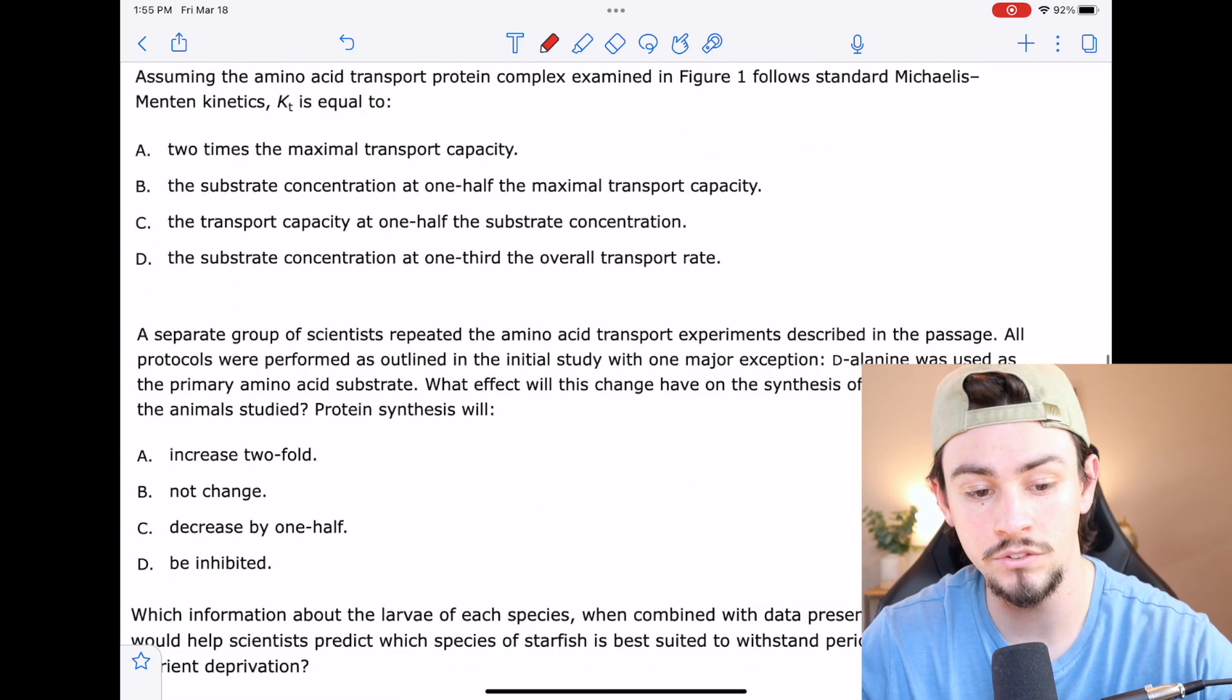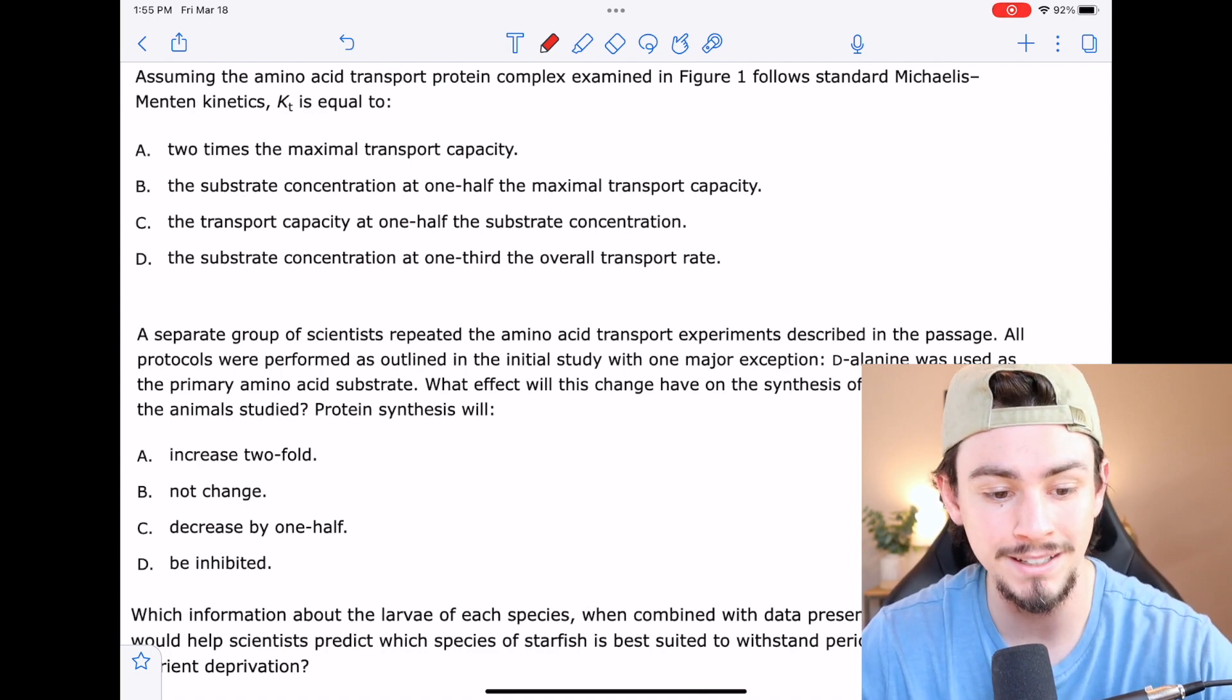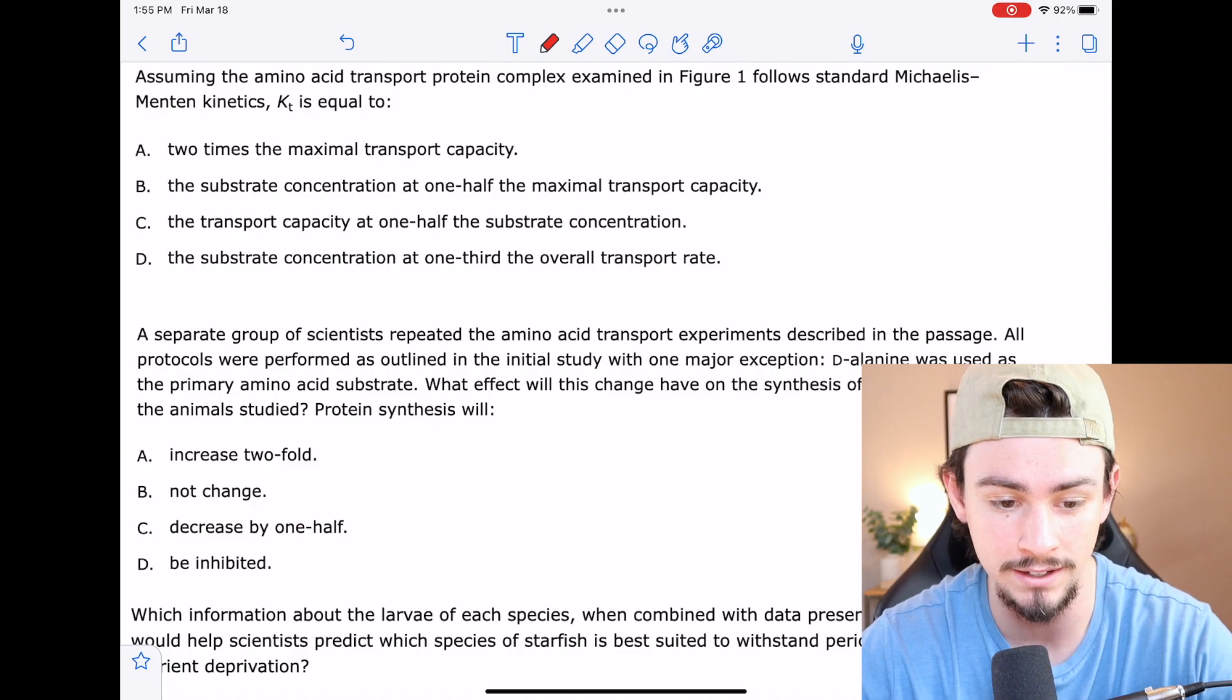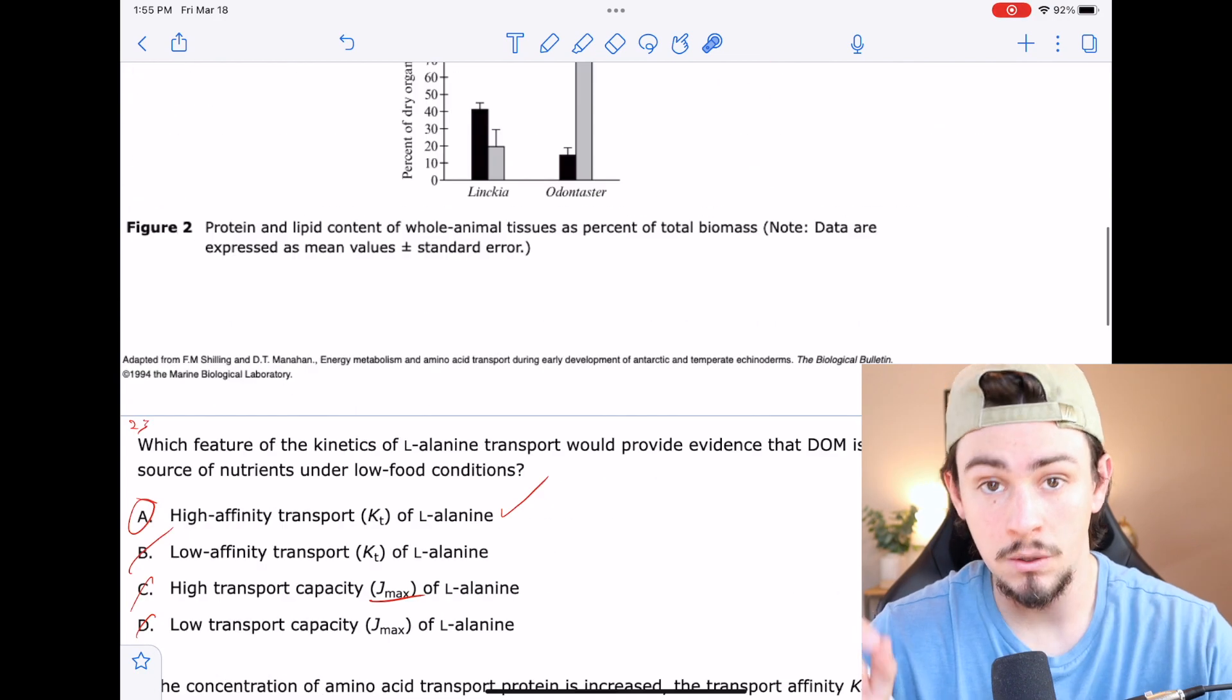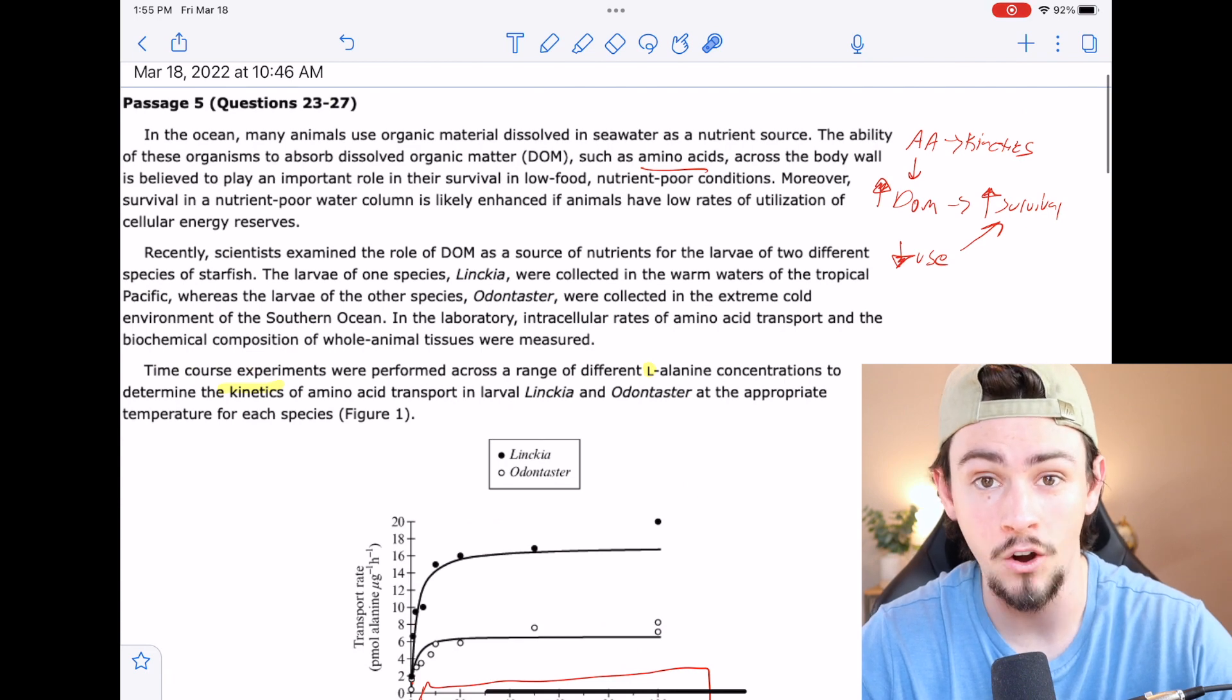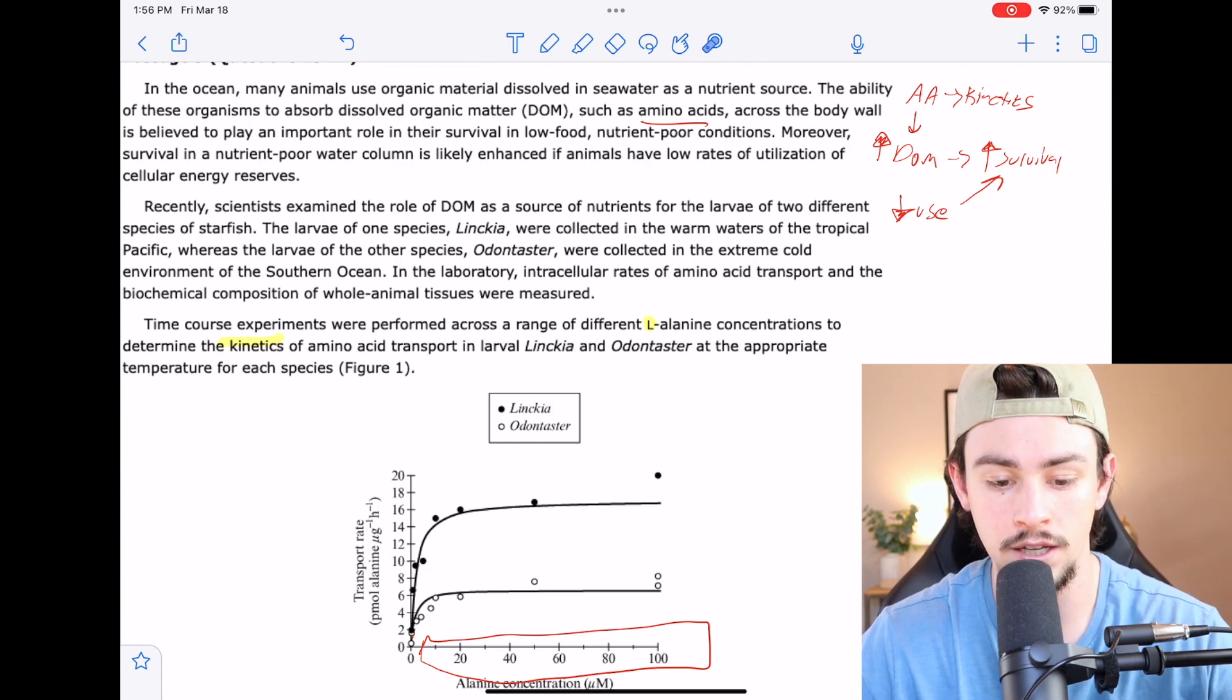Number 25 says if we assume that the amino acid transport protein complex examined in figure one follows standard Michaelis-Menten kinetics, then KT is equal to what? Okay, so we've already kind of made this assumption. That's how we've gotten the other questions correct. But what they're saying is if we look at figure one, which is here, what does KT equal to? Now what you'll notice here is something really tricky. And that's that this passage doesn't mention KT at all. So a lot of students will waste a ton of time going back and reading and rereading this passage looking for KT over and over. But it's not there.